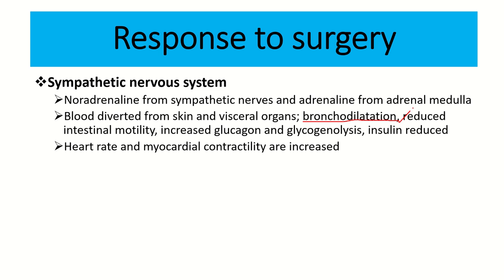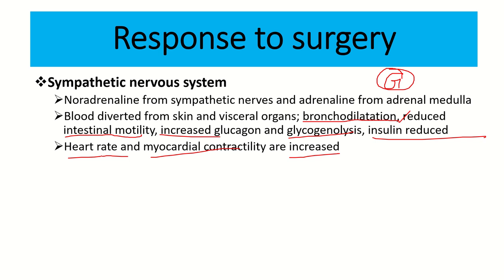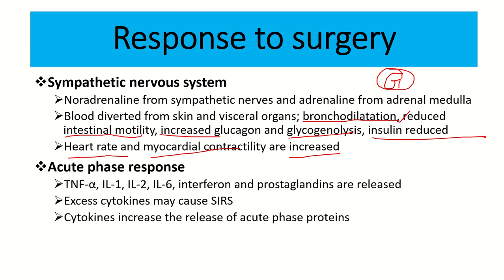Intestinal motility is reduced in emergency conditions. Glucagon increases and glycogenolysis increases, while insulin is reduced — all to raise blood glucose. Heart rate and myocardial contractility increase because we need more blood delivered to peripheral and central organs. The acute phase response releases tumor necrosis factor alpha, interleukin-1, 2, and 6, interferon, and prostaglandins. Excess cytokines may cause SIRS — systemic inflammatory response syndrome. Cytokines increase the release of acute phase proteins.